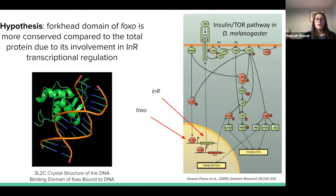For the insulin pathway regarding the gene FOXO specifically, we hypothesize that the forkhead domain of FOXO is more conserved compared to the total protein due to its involvement with INR transcriptional regulation. The image on the left shows the forkhead domain bound to the INR region in the DNA. The image on the right shows the insulin TOR pathway in D. melanogaster where FOXO is a stimulatory transcription factor for INR.